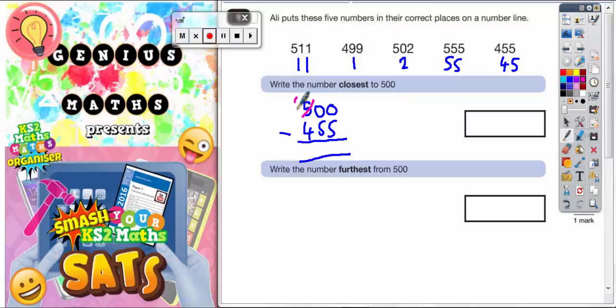So if you borrow one from the 5, that becomes a 4. And the one you borrowed turns this 0 into a 10. But that's still no good to us because this is still 0. So we need to borrow one from this 10, which now becomes 9. And the one we borrowed makes this 0 on the end into a 10.